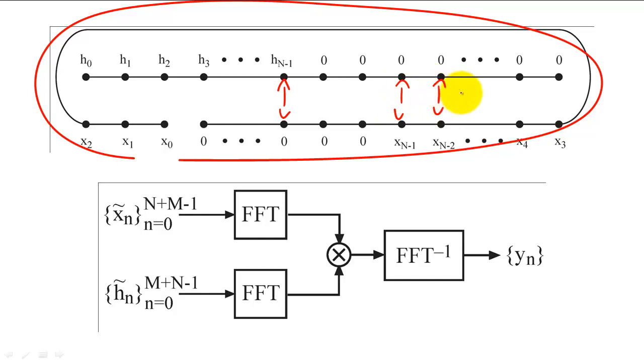Therefore, if x and h are both length n, then we will want to pad x and h with n minus one zeros.